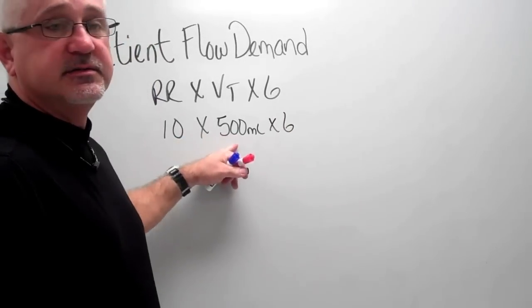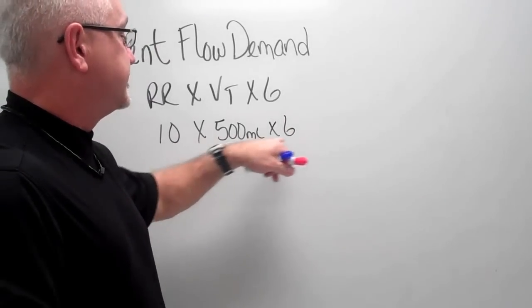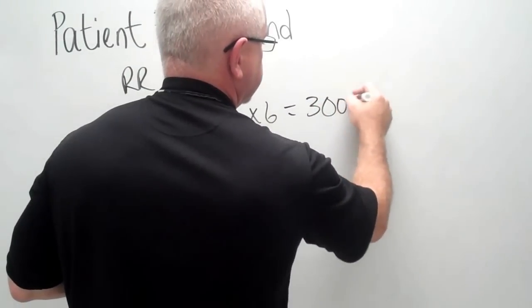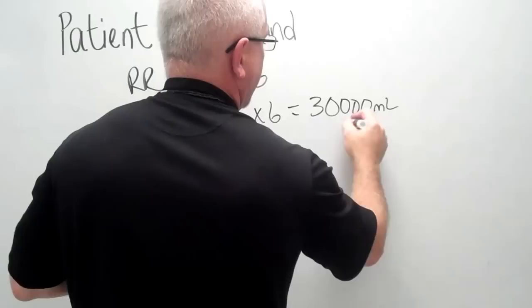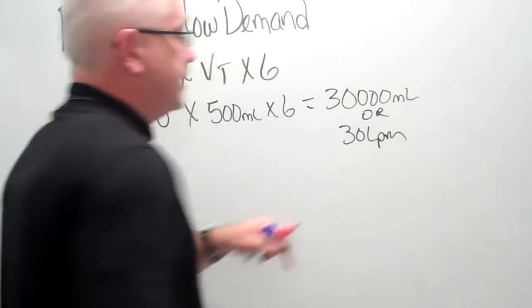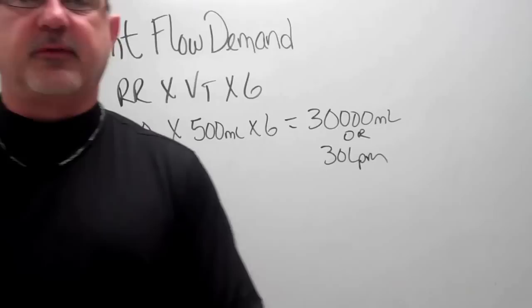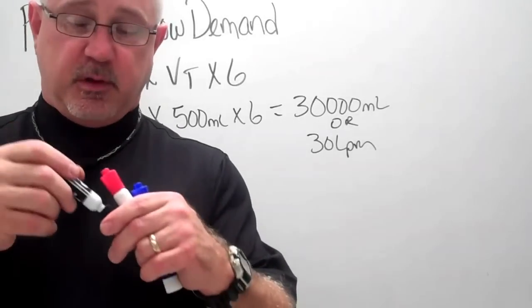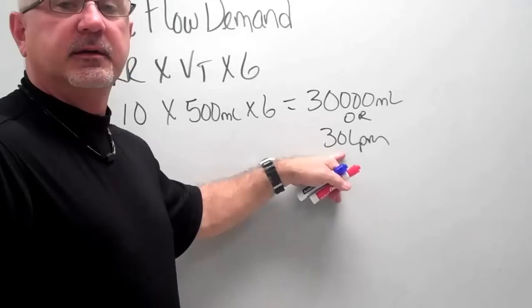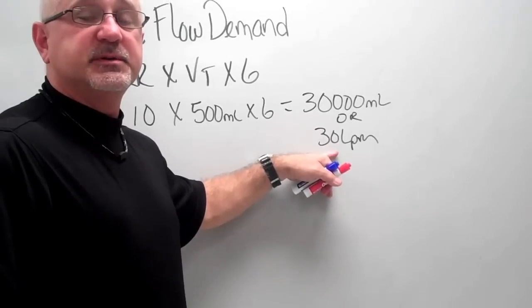10 times 500 is 5,000 mL times 6 equals 30,000 mL or 30 liters per minute. That would be the patient's inspiratory flow demand. That's the minimum flow demand right at this moment this patient is requiring to meet their inspiratory needs.